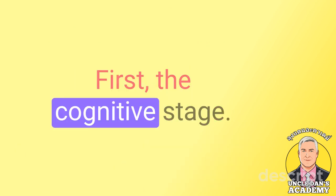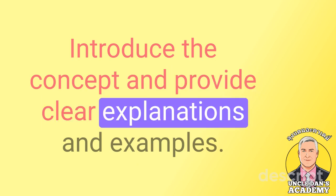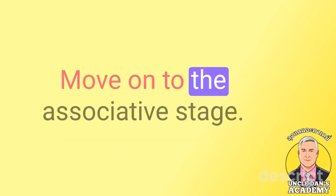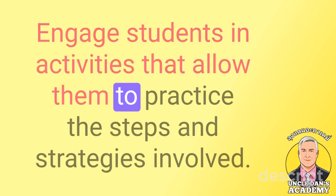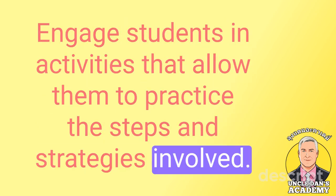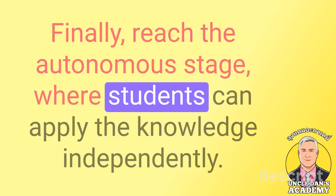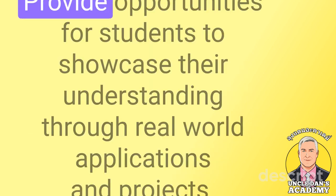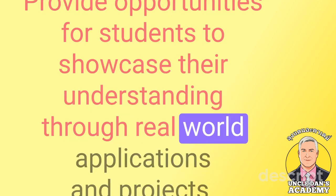To ensure students progress through the stages of development for procedural knowledge, follow these steps. First, the cognitive stage: introduce the concept and provide clear explanations and examples. Next, move on to the associative stage, engaging students in activities that allow them to practice the steps and strategies involved. Finally, reach the autonomous stage where students can apply the knowledge independently, with opportunities to showcase their understanding through real-world applications and projects.